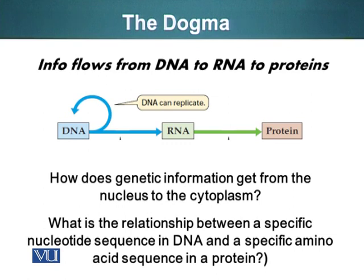This dogma raised two serious questions. In eukaryotes, we know the DNA is in the nucleus, whereas proteins are synthesized in the cytoplasm. So how is it that the genetic information is moved from DNA, which is present in the nucleus, to RNA? We know DNA doesn't physically move to the cytoplasm itself. The second question was: what is the relationship between a specific nucleotide sequence of DNA and a specific amino acid sequence in a protein? Basically, how is the language of nucleotides converted or translated into the language of amino acids?